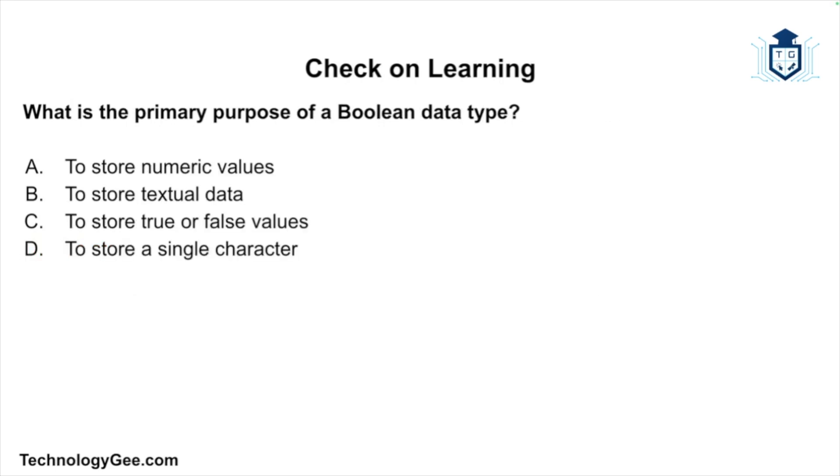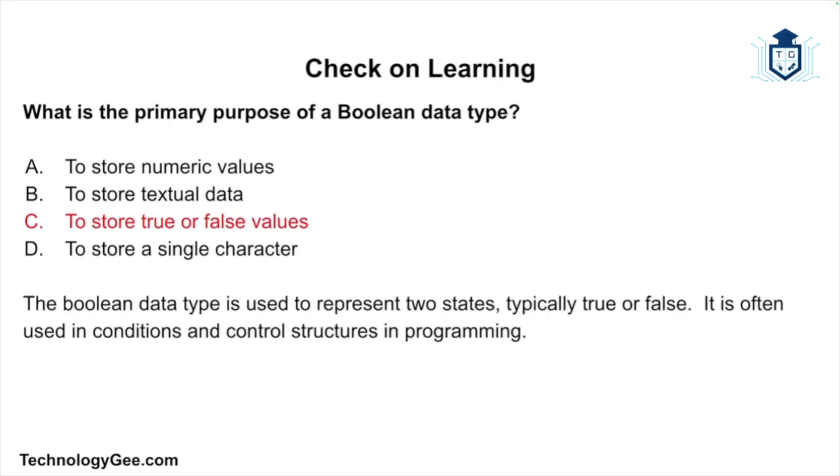Final question: what is the primary purpose of a Boolean data type? Is it to store numeric values, to store textual data, to store true or false values, or to store a single character? And of course, the correct answer is to store true or false values. The Boolean data type is used to represent two states, typically true or false. It is often used in conditions and control structures in programming.